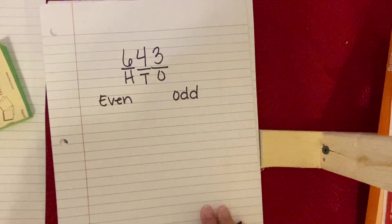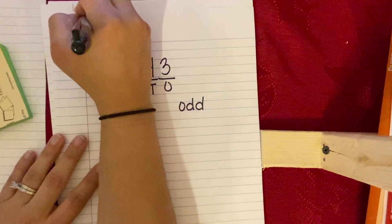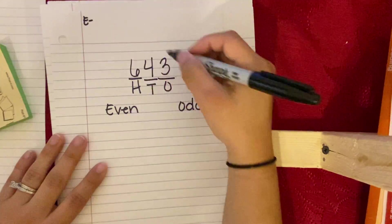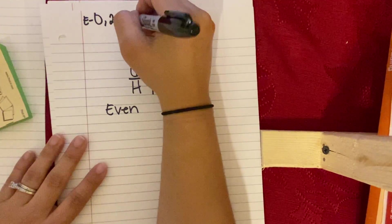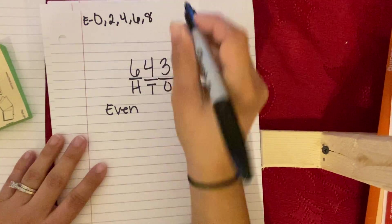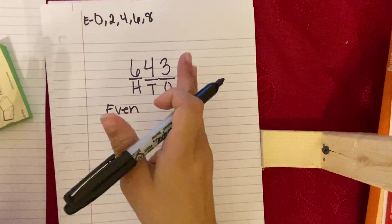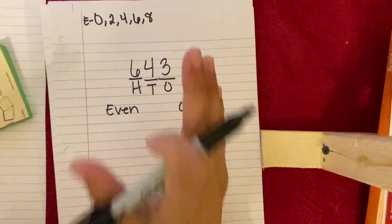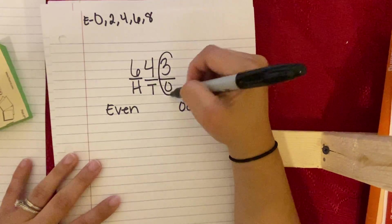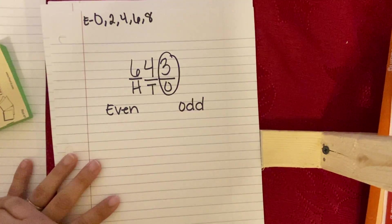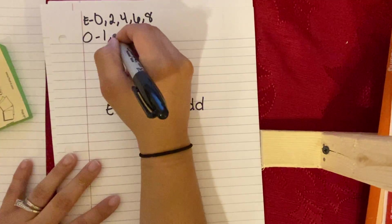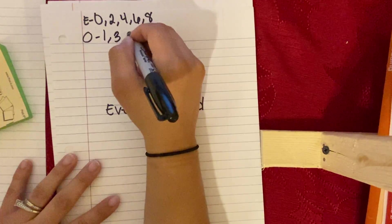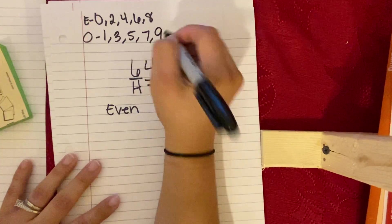So here's just a little quick reminder. Even are numbers that end in zero, two, four, six, eight. So no matter how many digits the number has, we always look at the last number, the last digit. Odd is one, three, five, seven, nine.